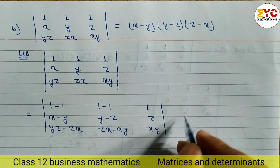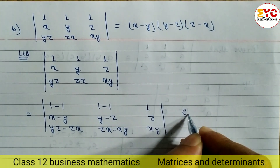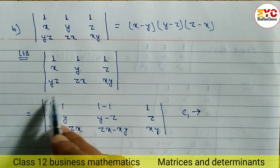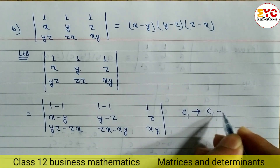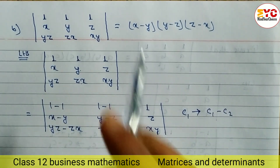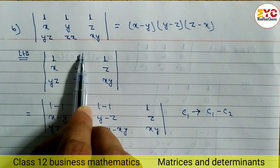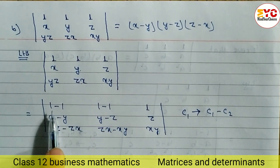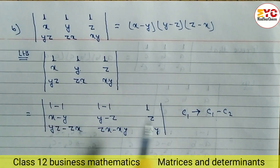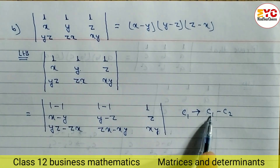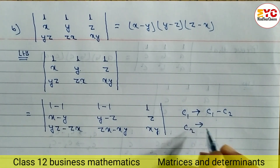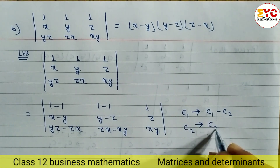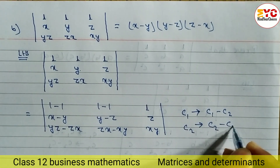Now let's write down what we have done. For column 1, we applied C1 = C1 minus C2 — from the first column we subtracted the second column to create the new column 1. Similarly for column 2, we applied C2 = C2 minus C3, subtracting C3 from C2.